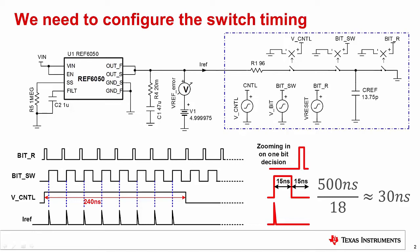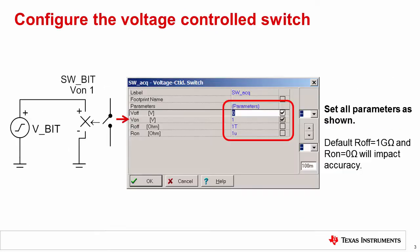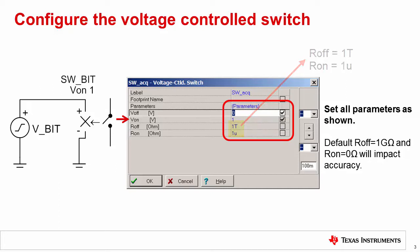Now that we have a general understanding of how the model works, we will look at how to configure the switches to implement this example timing. Double click on the switch to set the switch parameters. The default parameters may have an impact on performance, so it is best to change them. The off resistance should be at one tera ohm, and the on resistance should be at one micro ohm. Note that the default sets the off resistance to one giga ohm and the on resistance to zero ohms.